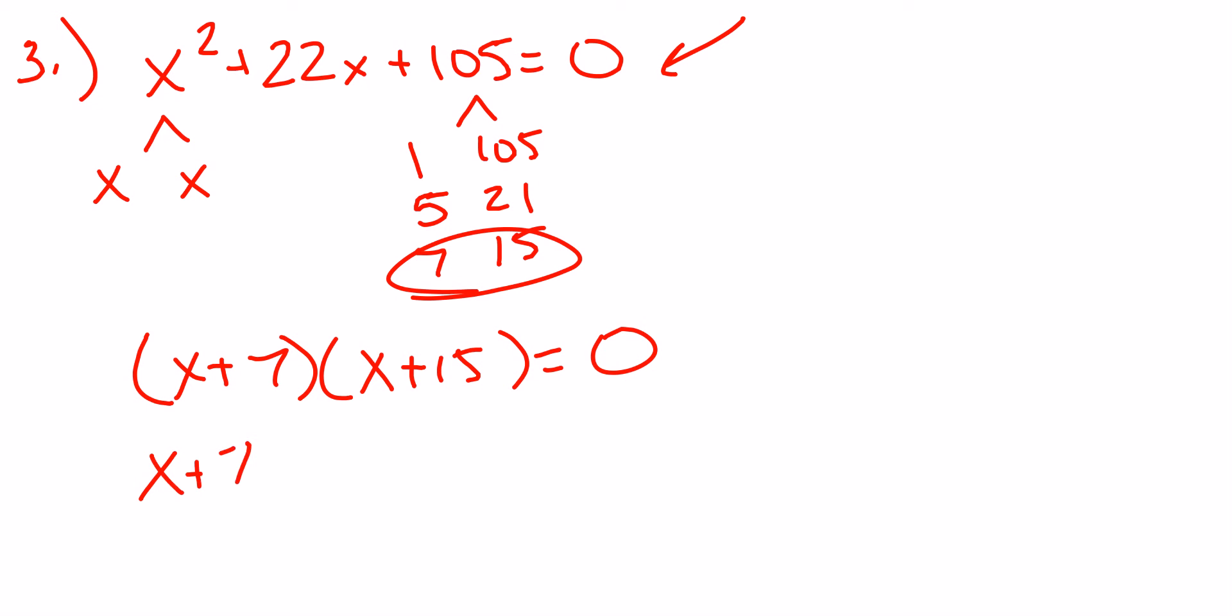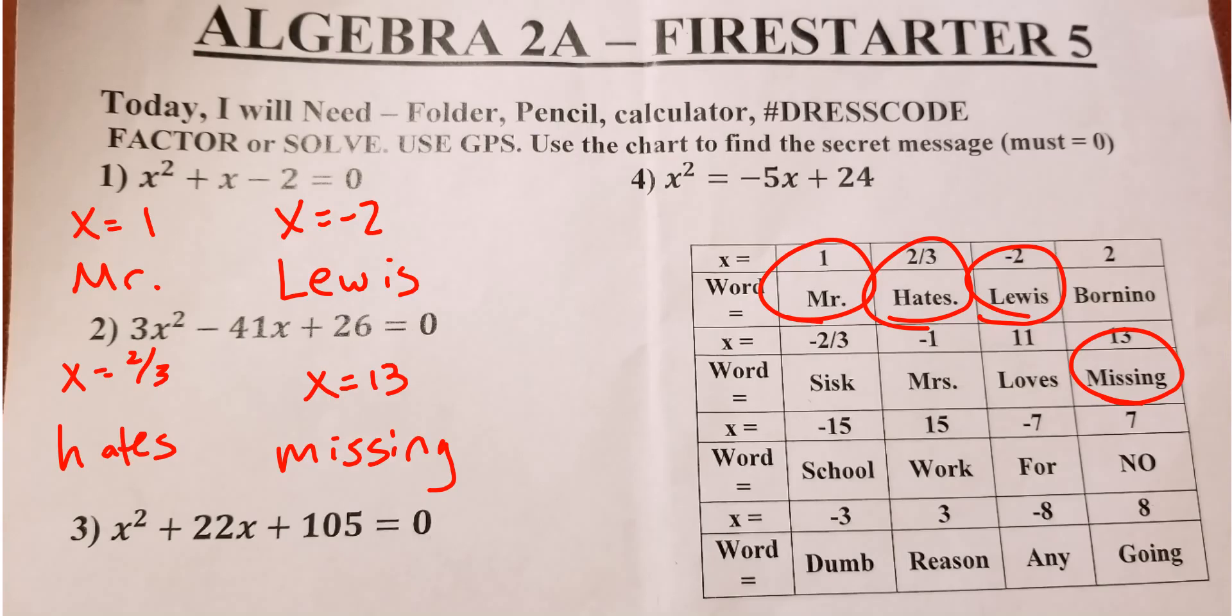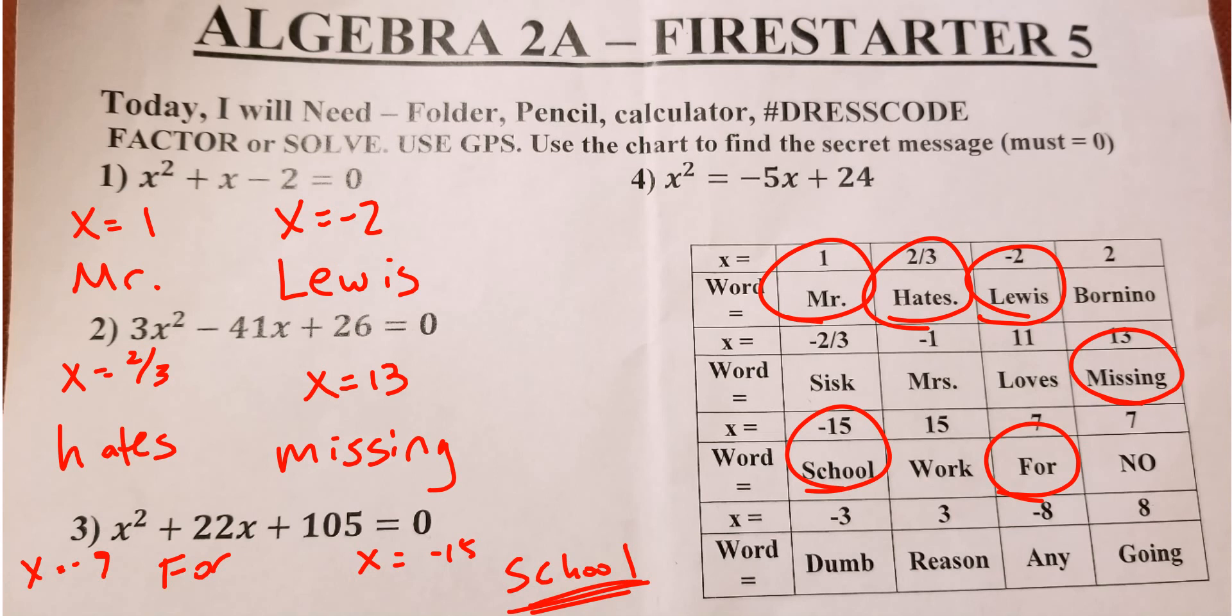Now since it equaled 0, I get to set each parenthesis equal to 0. Really easy to solve. Subtract 7 from both sides. So my first answer is x = -7. Subtract 15 from both sides on the other part. I get x = -15. So now I'm going to go to my chart, look for -7 and -15. So I find -7 is for. So x = -7 is for. And then -15 is school. So right now we have Mr. Lewis hates missing. I bet school is going to go next. So remember the order is probably off just a little bit. So I bet it's going to say Mr. Lewis hates missing school for. And then we're going to find out the next part.